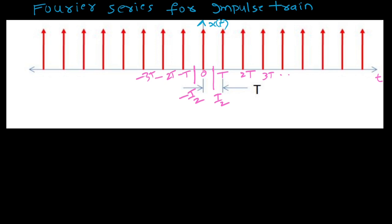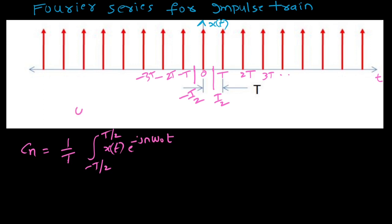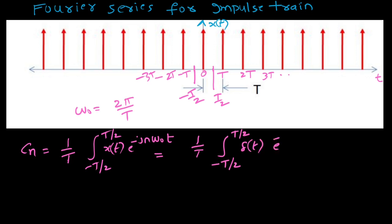I want to find Cn, which is 1 over T, integrated from minus T/2 to plus T/2 of x(t) times e to the power minus j n omega-naught t, where omega-naught is 2 pi over T. Between minus T/2 and plus T/2, x(t) is delta(t), so we integrate delta(t) times e to the power minus j n omega-naught t dt.